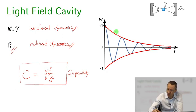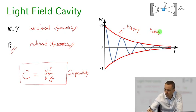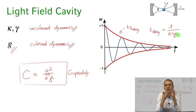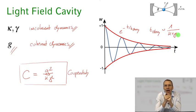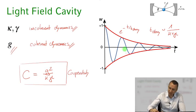We have an exponential decay envelope with a time constant t_decay proportional to one over kappa plus gamma. So we want the loss rates out of the cavity to be as small as possible — the photon to live as long as possible in the cavity, the atom to scatter as little as possible into free space — and G as large as possible, to see many oscillations before they are eventually damped out.